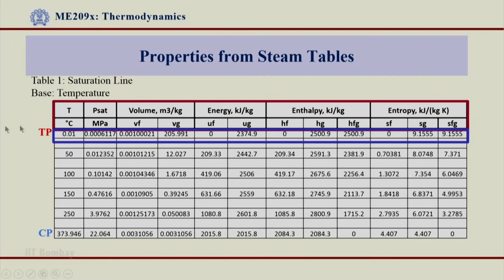Notice the first row at 0.01°C, which is the triple point temperature. Here, Uf is given as 0, Hf is 0, and Sf is also 0. This is because we have made the triple point temperature our reference point. At this triple point, Uf, Hf, and Sf are assumed equal to 0, and all other values are determined relative to this datum. So energy, enthalpy, and entropy are fixed as 0 at the triple point.